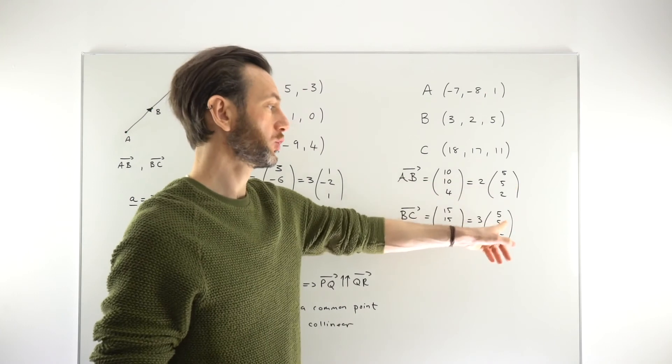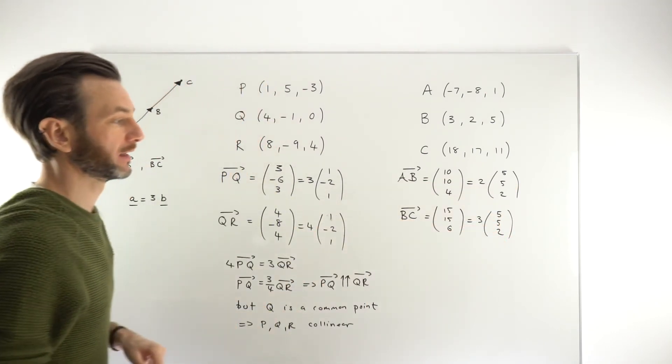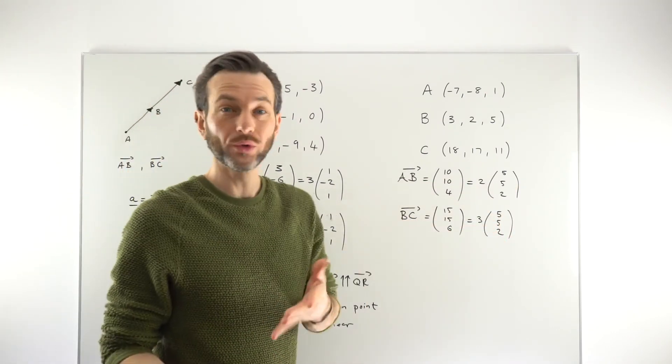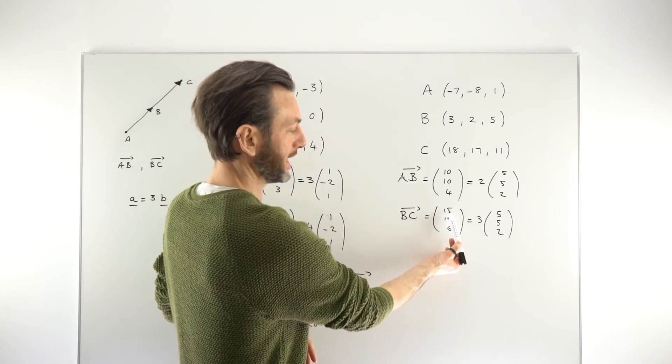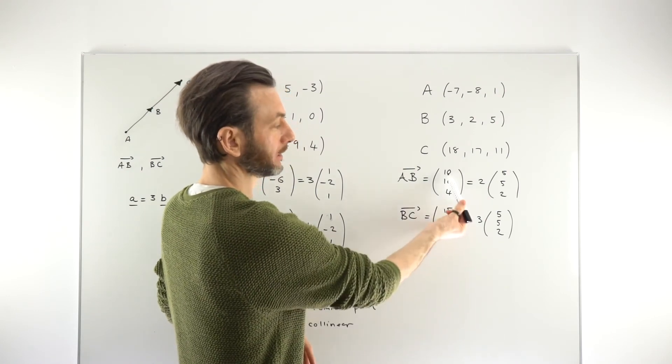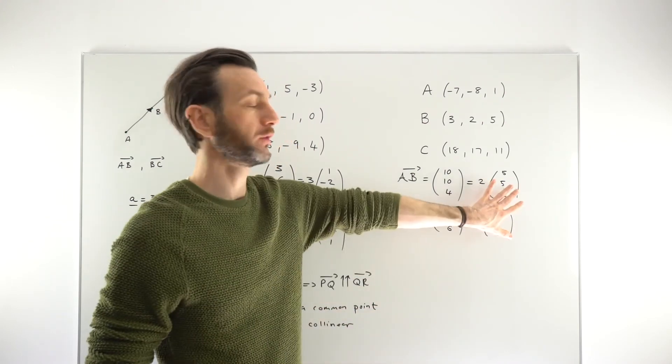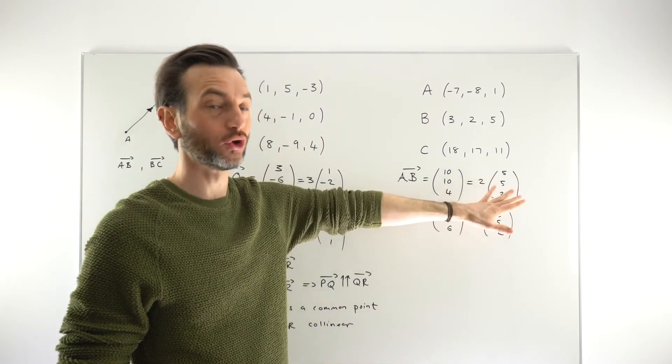Now, you don't always have to do that. For example, if this was 20, 28, then clearly 20, 28 is double this. So you don't need to use the base vector method in that case. You could do, but it'd be fine just to say that that one is, you know, double twice the other vector. That would be good enough.